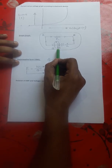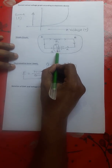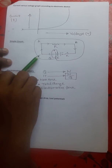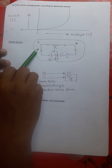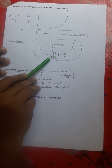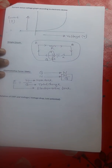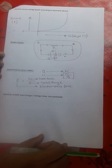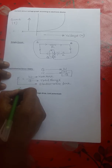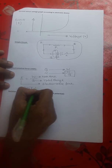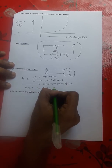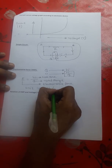To shift one coulomb of charge from the positive terminal of a cell through the entire circuit and return it back to its previous position — the amount of electric work done is known as electromotive force. The unit of electromotive force is volt, or simply V.